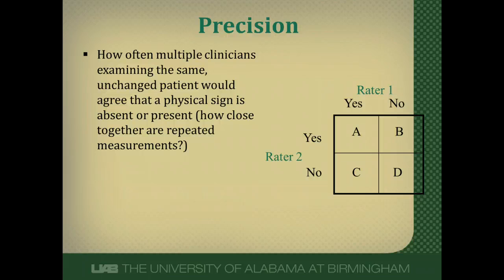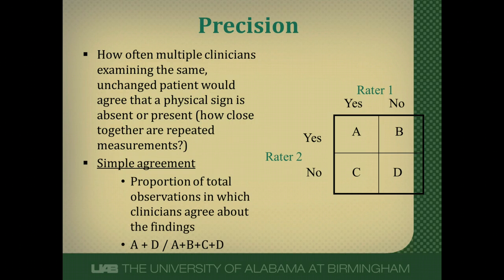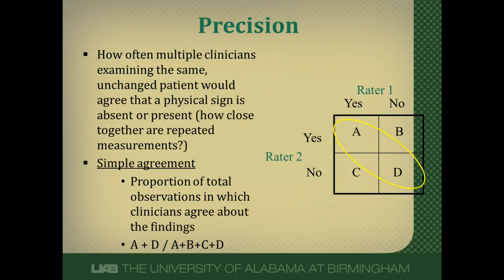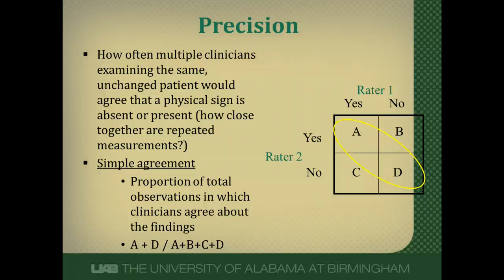One way we might try to express this reliability is through simple agreement. Simple agreement is just a proportion of total observations in which the measures agree about the findings. If we look at this 2x2 table, there are two places we can agree — box A and box D — and the other two boxes we disagree. Simple agreement is just the percentage of total agreement out of all the measurements: we add up A and D, then divide by the entire 2x2 table total.